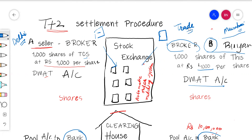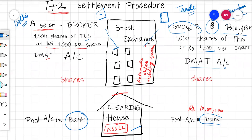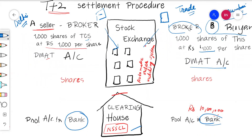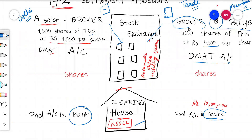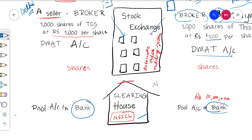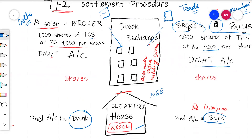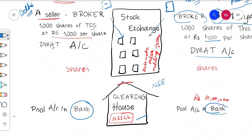After the trade day, the stock exchange passes the information to the clearing houses and clearing corporations — for example, NSCCL. The clearing house does all the calculations: it determines which shares and how much money need to be exchanged, i.e., who has to deliver the shares and who has to pay the money, calculating the net obligations for each party.